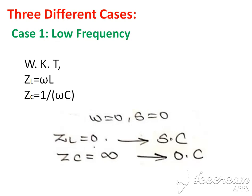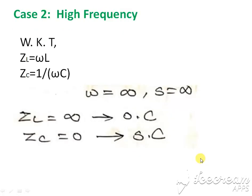The impedance corresponding to inductance is omega-L, and the impedance corresponding to capacitance is one by omega-C. When omega is equal to zero, substituting here gives Z_L equal to zero, meaning the inductor is a short circuit. Substituting omega equal to zero in the capacitor formula gives Z_C equal to infinity, meaning the capacitor is an open circuit.